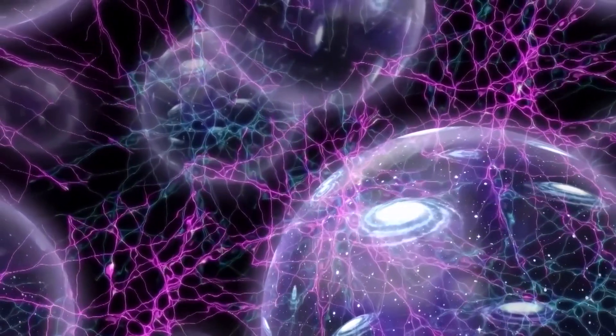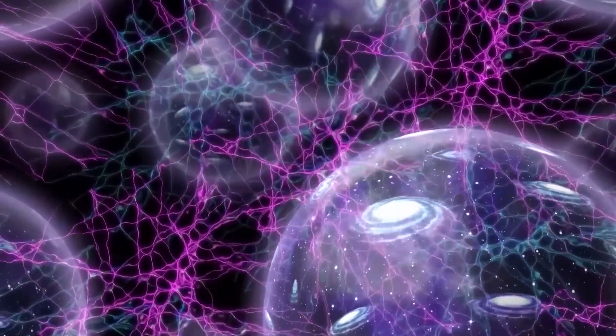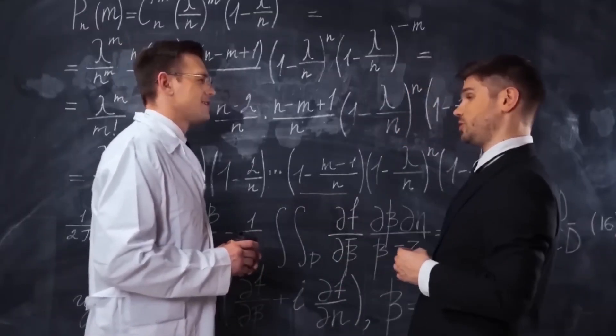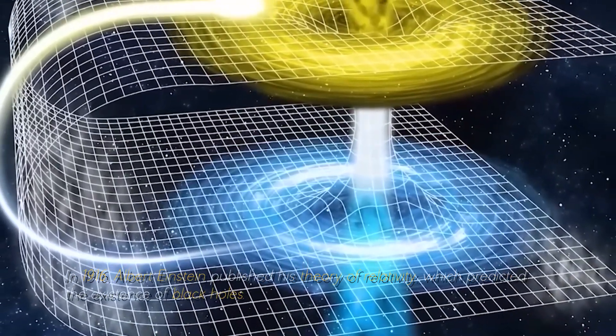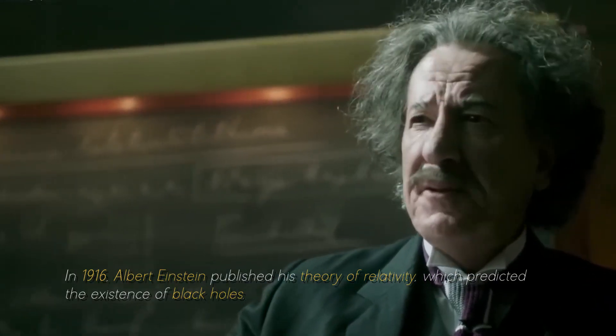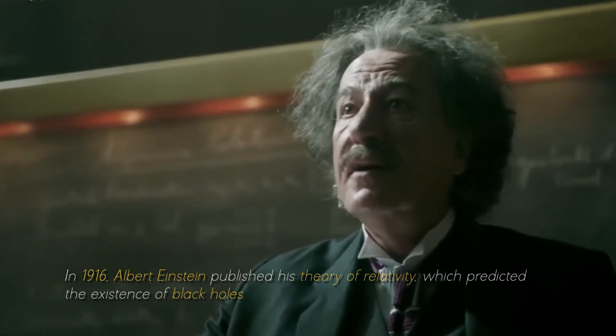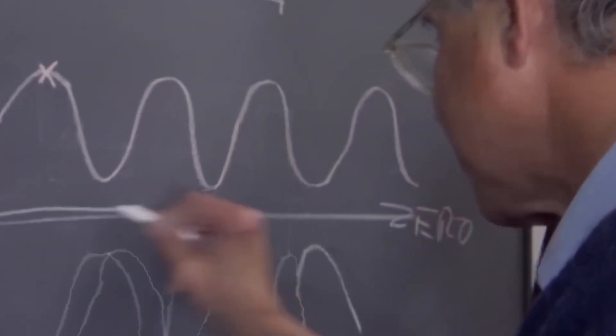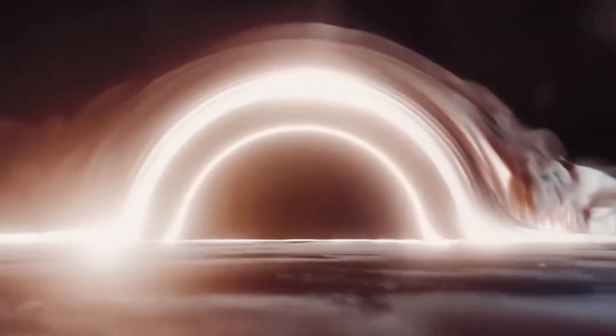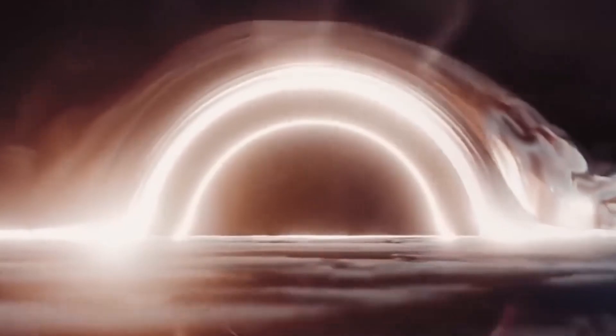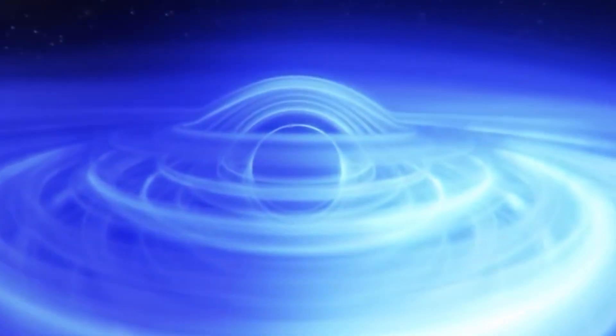Although many of us have a general idea of what black holes are, there are still some gaps in our knowledge. In 1916, Albert Einstein published his theory of relativity, which predicted the existence of black holes. At that time, the concept of black holes was purely theoretical. It was necessary to wait another 50 years for the scientific community to find evidence of their existence.